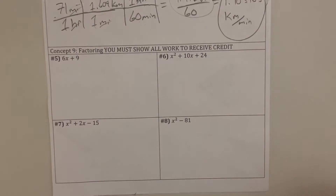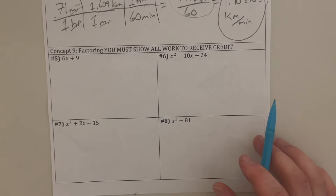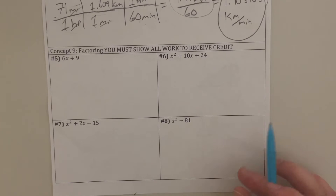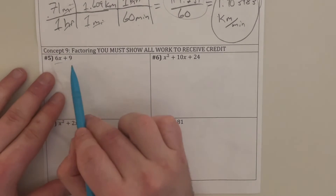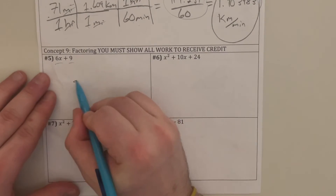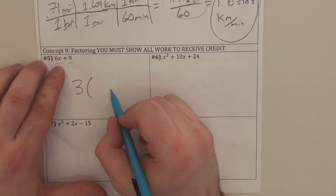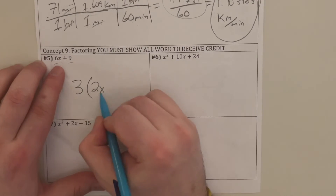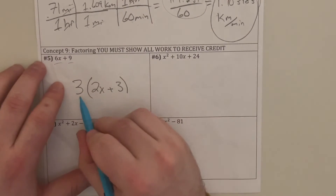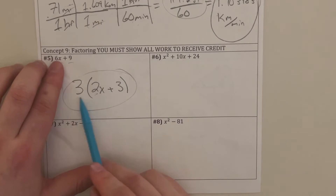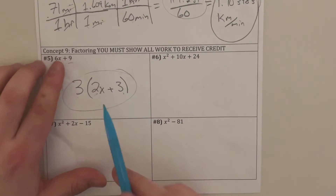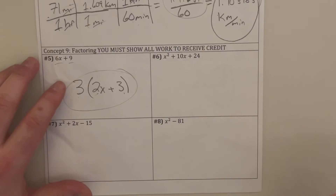When we are factoring, make sure that you're dividing each term in the polynomial by the greatest common factor. It's essentially like undoing the foiling, or undoing the distributive property. I can divide each of these terms by 3, so I have a 3 on the outside. Once I divide by 3, I have just a 2x and a 3. You can always check by multiplying it out: 3 times 2x is 6x, and 3 times 3 is 9.